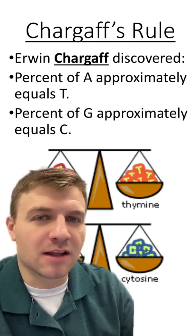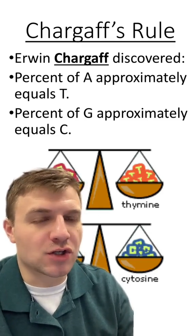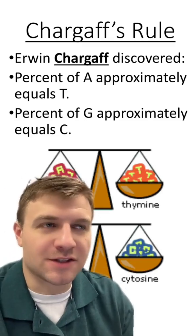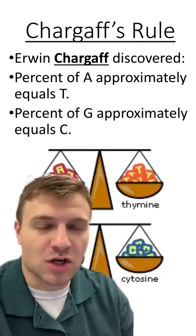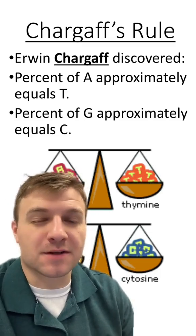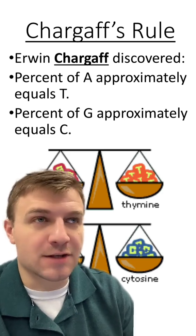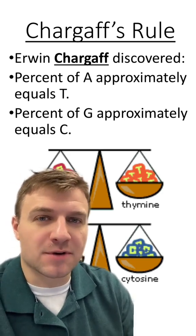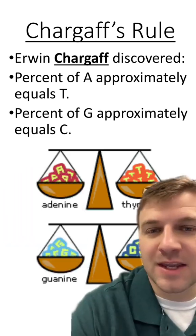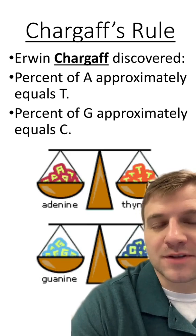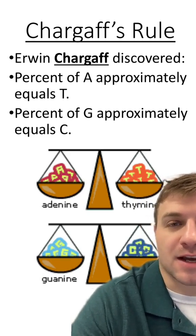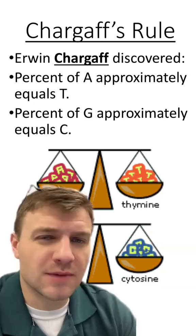Let's talk about something within molecular biology called Chargaff's Rule. Chargaff's Rule was obviously discovered by Erwin Chargaff. This rule basically states that the percent of adenine, or A, is approximately the same as the percent of thymine, T. It also states the percent of guanine is approximately the same as the percent of cytosine.